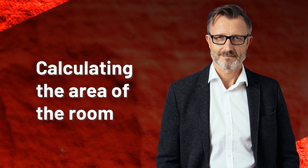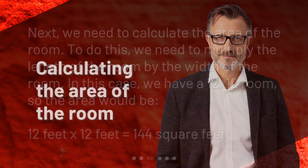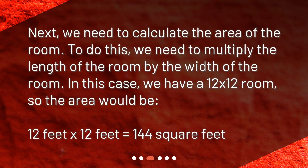Calculating the area of the room. Next, we need to calculate the area of the room. To do this, we need to multiply the length of the room by the width of the room. In this case, we have a 12 by 12 room, so the area would be 12 feet by 12 feet equals 144 square feet.